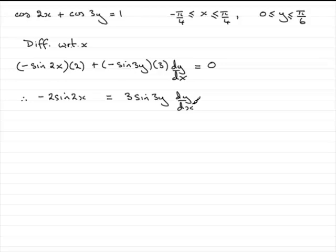Now to get dy/dx, I need to just divide both sides by 3 sine 3y, so therefore at the end of the day, what we've got is dy by dx equals minus 2 sine 2x, all divided by 3 sine 3y.